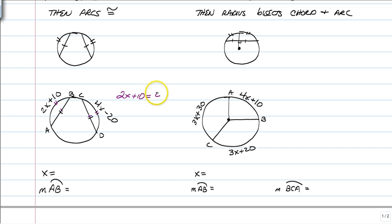So, all you have to do is set them equal to each other. 2x plus 10 is equal to 4x minus 20. 30 is equal to 2x, so x is equal to 15. So I want to know the measure of arc AB. AB is from here to here. So, 2 times 15 is 30, plus 10 is 40 degrees. And there you have it.